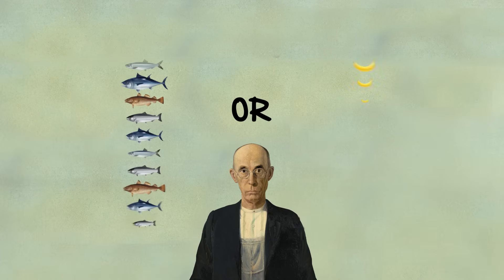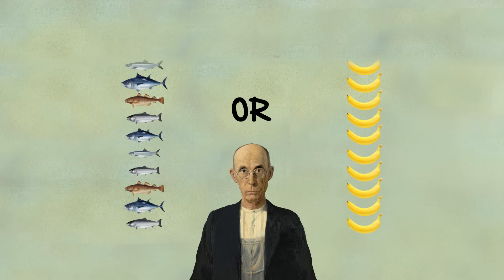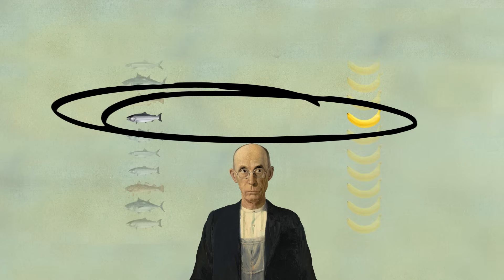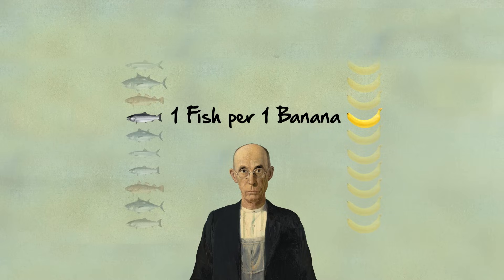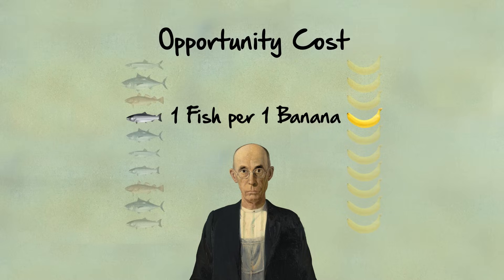Bob has to choose to gather bananas or catch fish. When he chooses to gather one banana, he gives up one fish. In essence, Bob trades with himself — he can use that time to gather bananas or trade that time to catch fish. The cost of that trade is one fish per banana. That's Bob's opportunity cost.